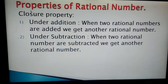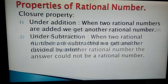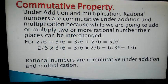When we divide two rational numbers, it is not compulsory that we get another rational number. So rational numbers are closed under addition, closed under subtraction, closed under multiplication, but rational numbers are not closed under division.